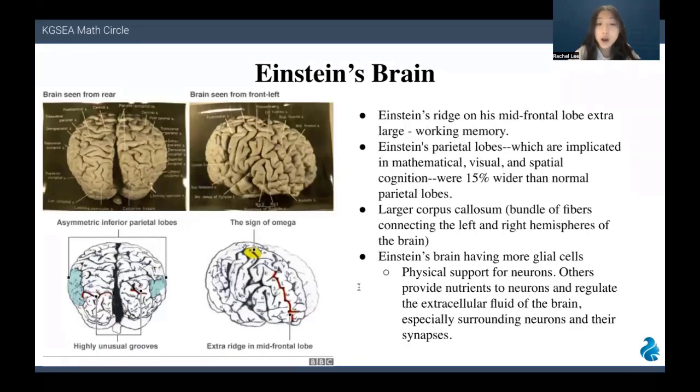To now talk about how Einstein's brain was actually different from average: Einstein's ridge on his mid-frontal lobe was extra large, which helps working memory. Einstein's parietal lobe, which is implicated in mathematical, visual, and spatial cognition, was 15% wider than normal parietal lobes. Larger corpus callosum was also one of the things Einstein's brain was different from average. The corpus callosum is a bundle of fibers connecting the left and right hemispheres of the brain, as mentioned above. Einstein's brain could also have more glial cells, which are physical support for neurons. Others provide nutrients to neurons and regulate the extracellular fluid of the brain, especially surrounding neurons and their synapses.